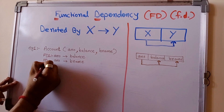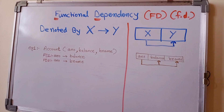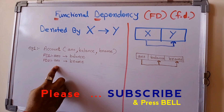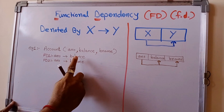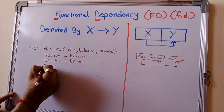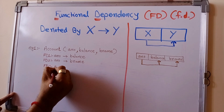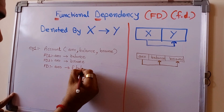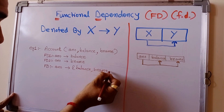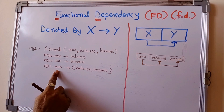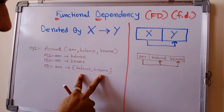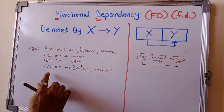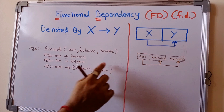This means when we know the account number, we can get balance or we can get branch name. All together, we can say that from account number we can get both branch name and balance. This can be denoted as: account number determines balance and branch name. Here account number is the determinant, and balance and branch name are the dependents.